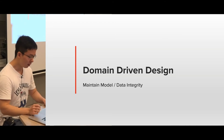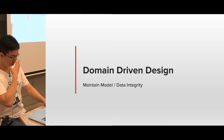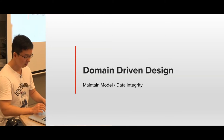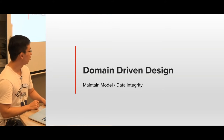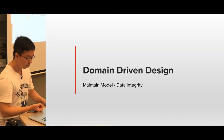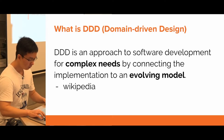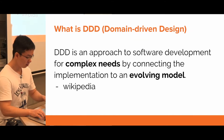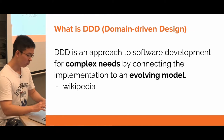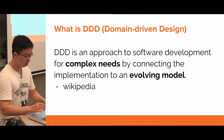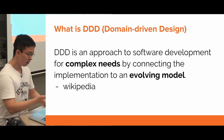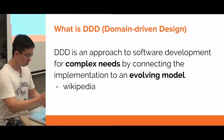Even if we do not know what exactly is domain-driven design, we can figure out from the name that it's about maintaining model and data integrity. Because when we talk about software, we are talking about input and output - everything is data. So we can take a look at the Wikipedia definition of DDD. DDD is an approach to software development for complex needs by connecting the implementation to an evolving model. Here, evolving model means the model could change over time. Why is it for complex needs? I will talk about this later.